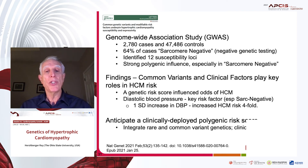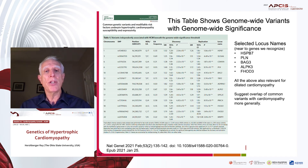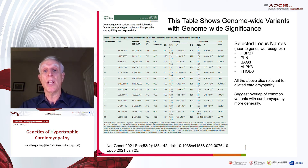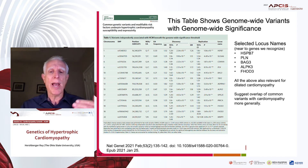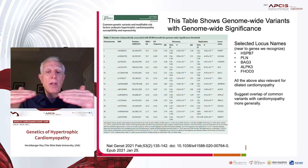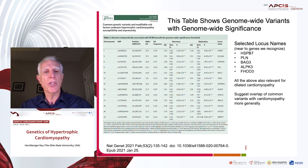I anticipate a clinically deployed polygenic risk score to integrate rare and common variant genetics sometime soon. Some of the selected loci found include genes we recognize: Hspb7, phospholamban, BAG3, ALPK3, and FLOD3. These are genes that are also relevant and have been identified in dilated cardiomyopathy GWAS. It really illustrates the overlap and interaction of DCM and HCM, where they are tugging at each other to move the myocardium from hypocontractile to hypercontractile and in other probably more fundamental cellular processes.